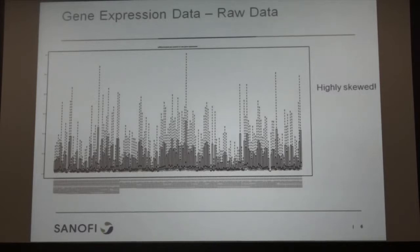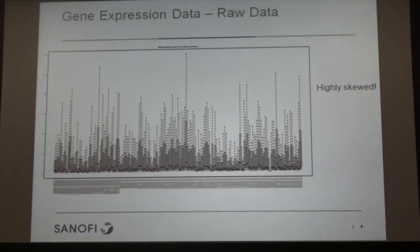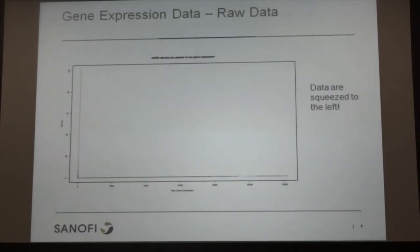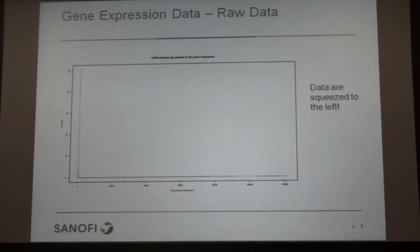First we plotted this data. You can see there are many box plots — each box represents all the genes within one subject. The first few are patient gene expression and the rest are healthy controls. They are highly skewed: the mean is all towards the lower end, and if you plot a density plot, almost all values are concentrated around zero. This is clearly not the right data to begin analysis on.